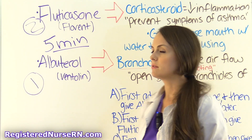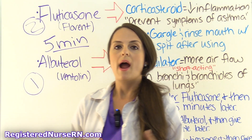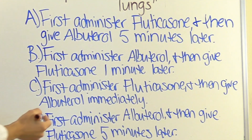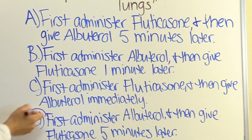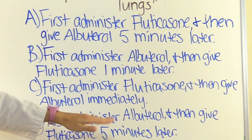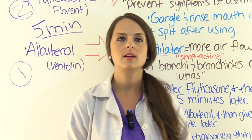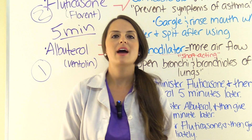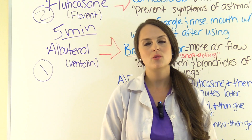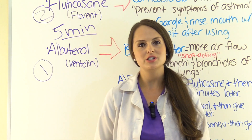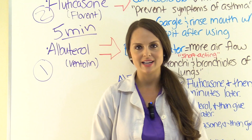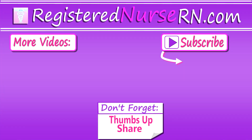So our answer is going to be D: first administer albuterol, and then give fluticasone five minutes later. That wraps up this NCLEX review question. Be sure to check out my other questions in this series. Thank you so much for watching, and don't forget to subscribe to our channel for more videos.